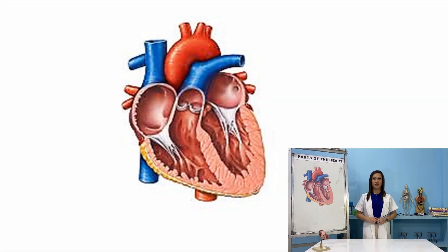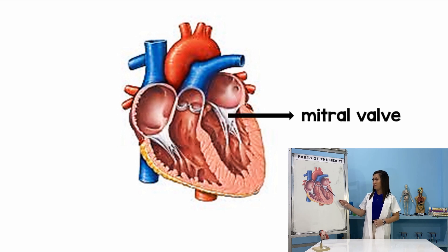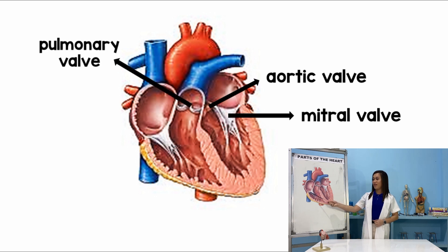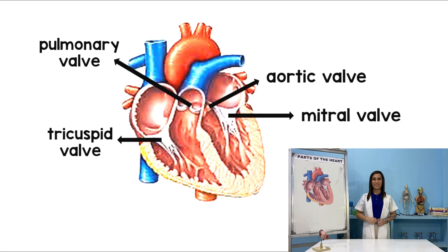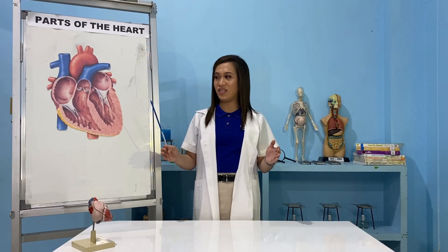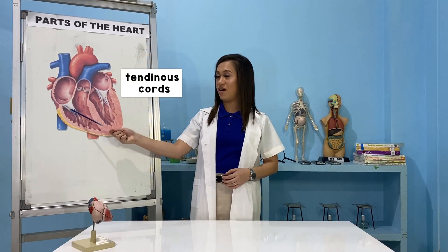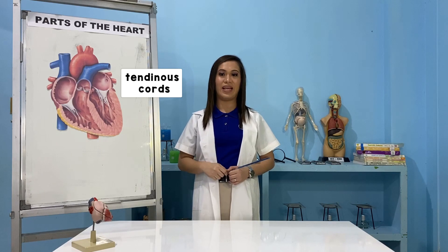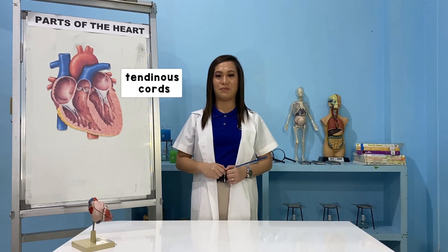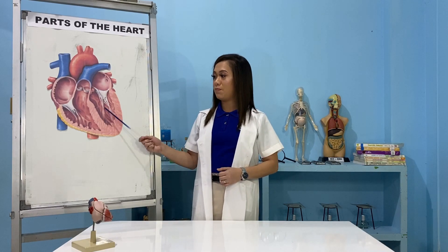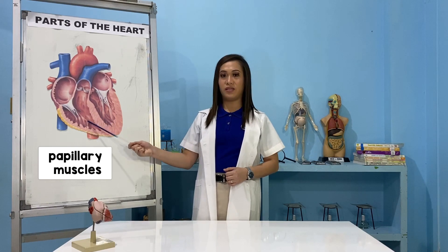The heart relies on four valves to help ensure that blood only flows in one direction. We have four valves: the mitral valve, the aortic valve, the pulmonary valve, and the tricuspid valve. To avoid the overexpansion or wide opening of the valve, tendons called tendinous cords are attached. It holds the valves in place and avoids flopping back while the heart is pumping. These tendinous cords are rooted or attached in the wall of the heart via specialized muscles called papillary muscles.